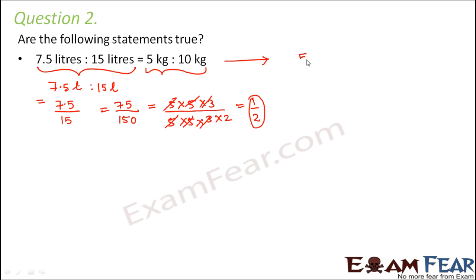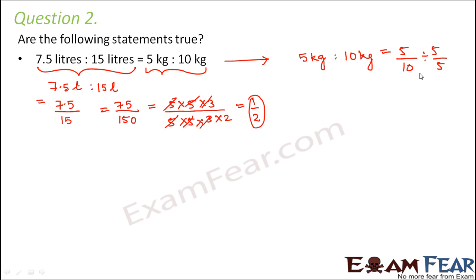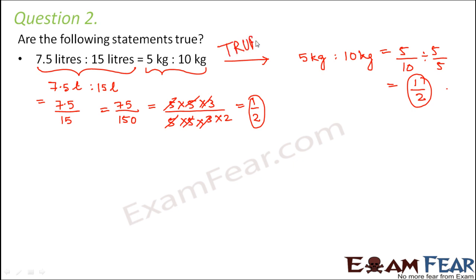Now for the right hand side: 5 kgs is to 10 kgs equals 5 by 10. Dividing numerator and denominator by the HCF of 5 gives 1 by 2. Both sides equal 1 by 2, so this statement is true.